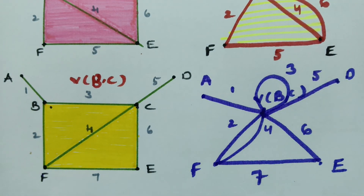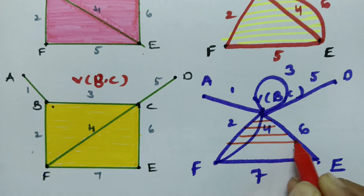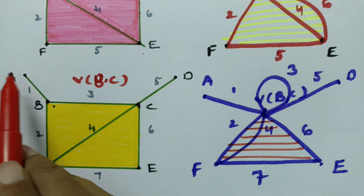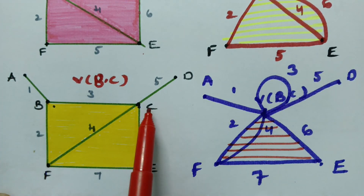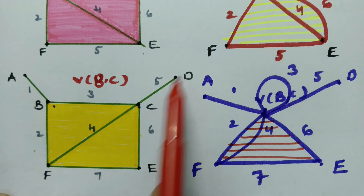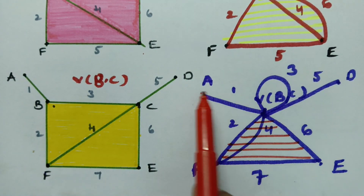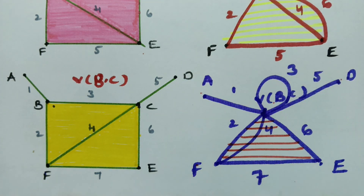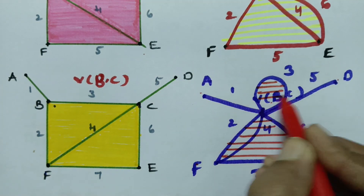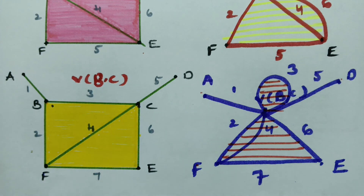There is no effect on the number of edges. The original graph has vertices A, B, C, D, E, F — six vertices. After fusion there are only 5 vertices. The vertices are reduced by 1, and the edges remain the same. This is how we draw the graph after fusion.